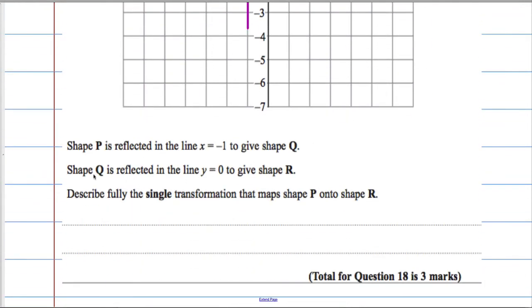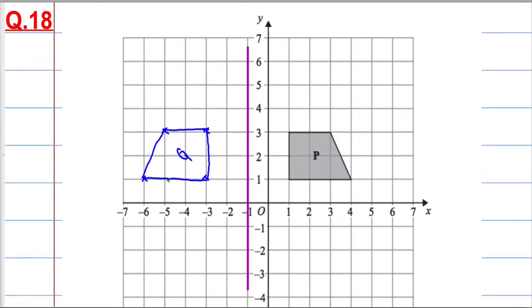Then I need to reflect in the line y = 0 to give R. Where is the line y = 0? This is the line x = -1. Y = 0 is the x-axis, because everywhere on this line, y is 0. So I'm going to reflect in that to get this red shape.